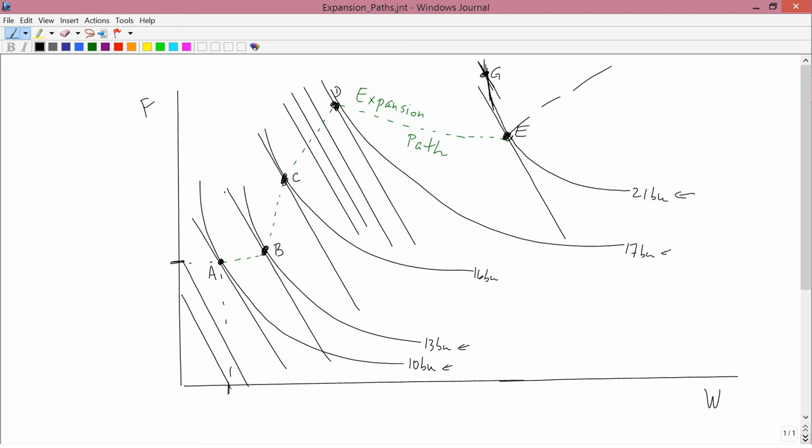In the case of going from D to E, one could call F an inferior input, because as output increased, the firm chose to buy less of it. And you could say a normal input is one where as output increases, the firm chooses to buy more of it. We don't actually use inferior and normal inputs very often in this class.